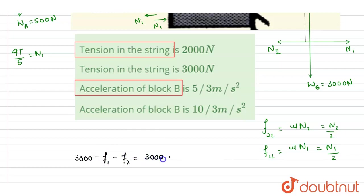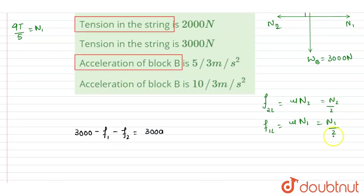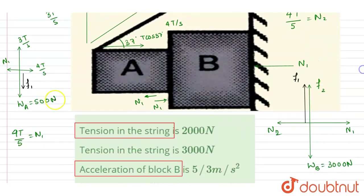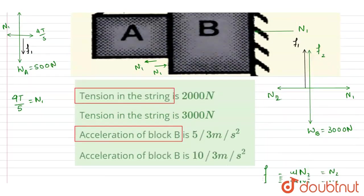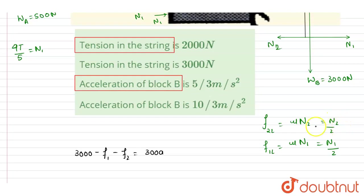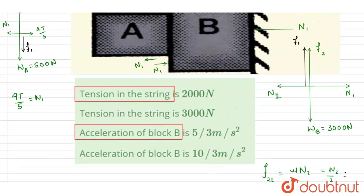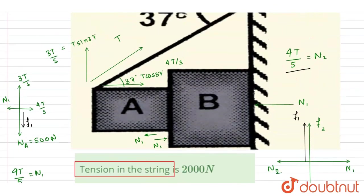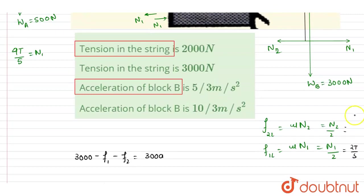Writing the force equation for B in the vertical direction: net force = 300a downward. For block A, the weight 500 N and f1 act downward, while the tension component 3T/5 acts upward. Since N1 = 4T/5, the limiting friction on A from surface 1 is mu × N1 = (1/2)(4T/5) = 2T/5.